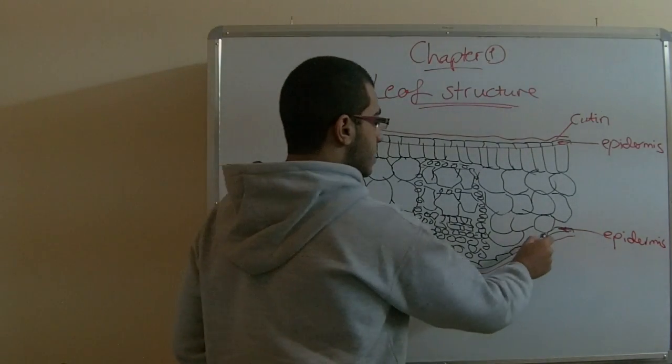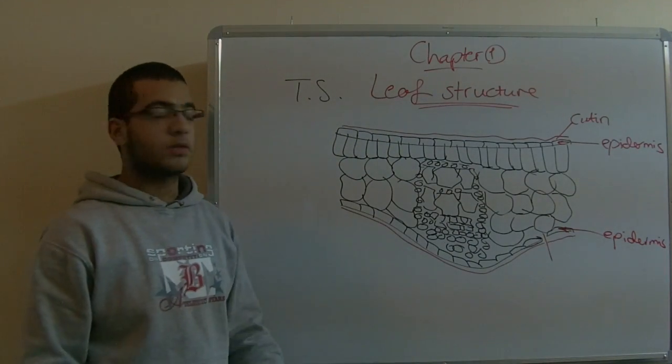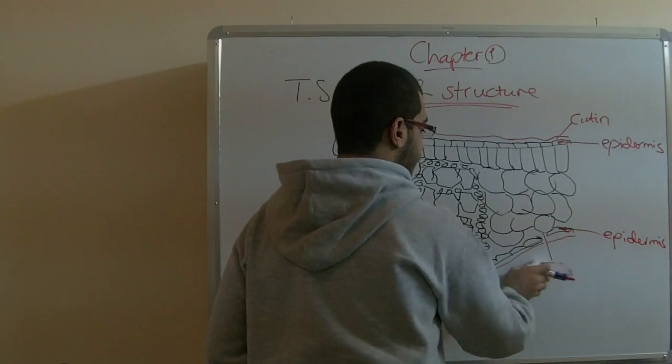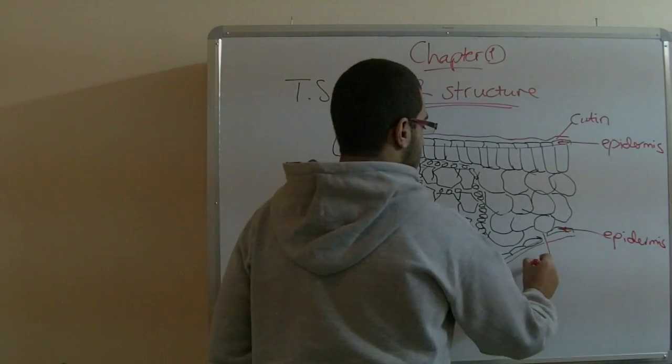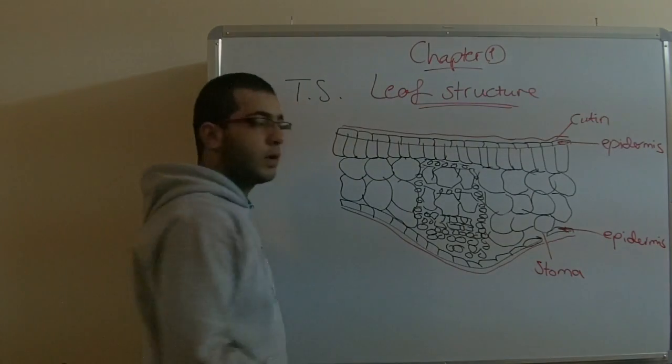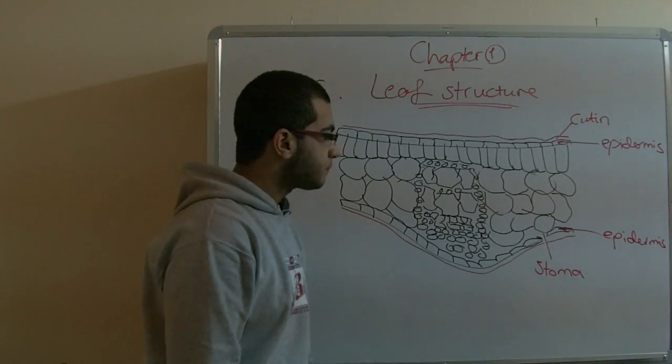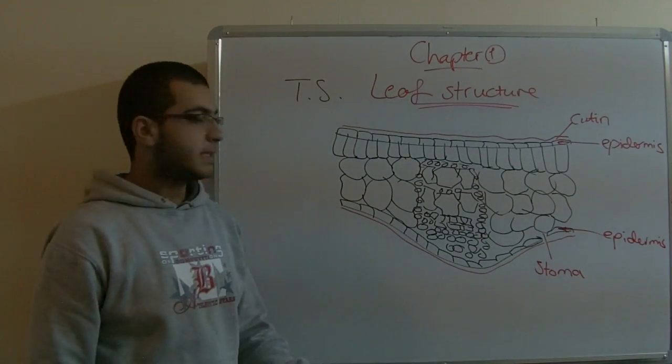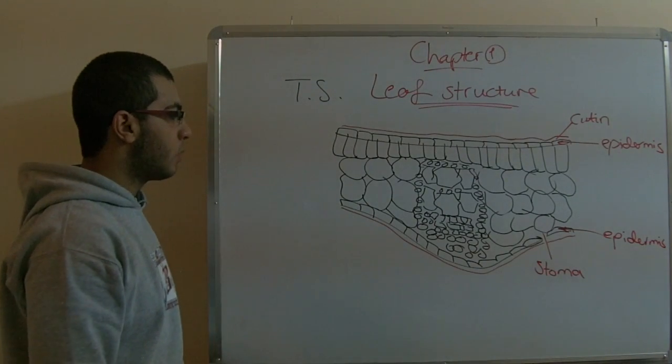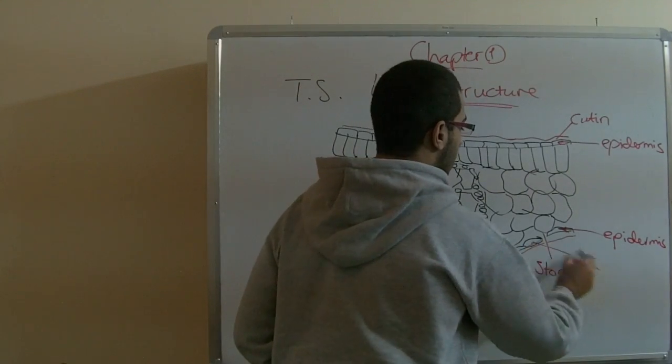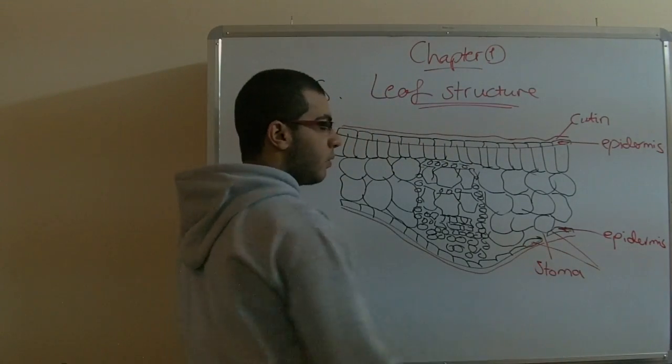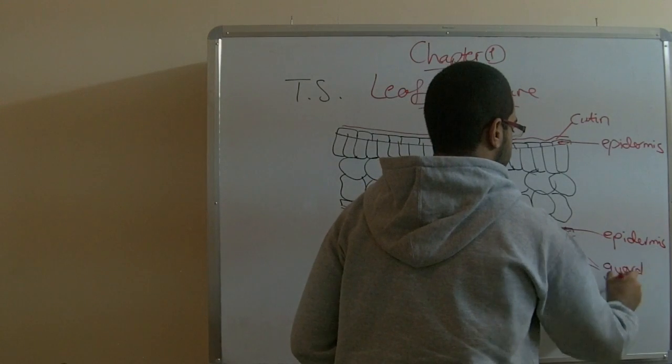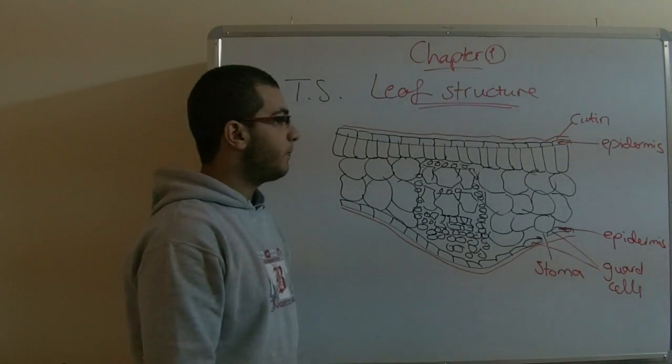In the lower epidermis, as we mentioned in the adaptation of the leaf to its structure, we have the stomata. A single one is called stoma and the plural is stomata. This stoma is an opening in the lower epidermis. They are also in the upper epidermis, but they are less in the upper than the lower. The two cells surrounding the stoma, which control the opening and closing of the stoma, are called guard cells, as they guard the stoma.